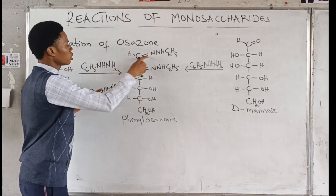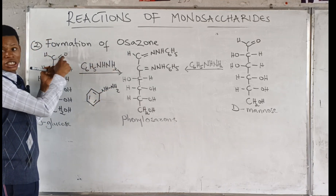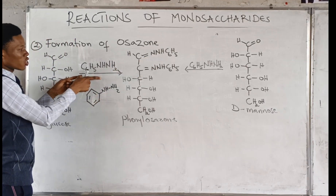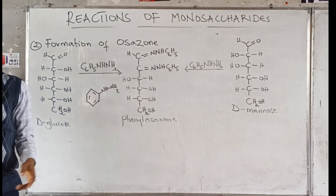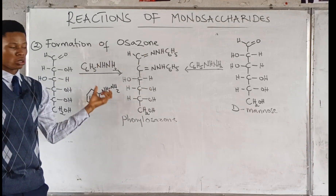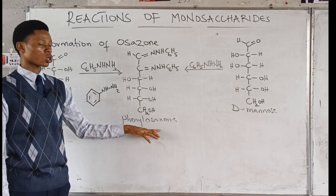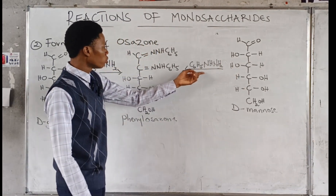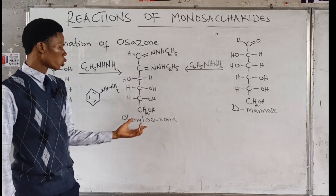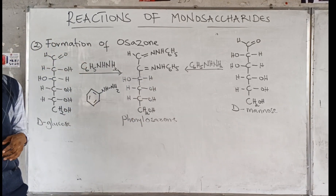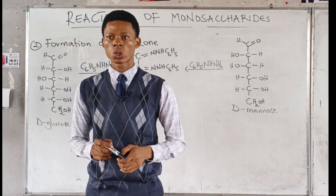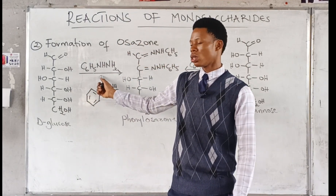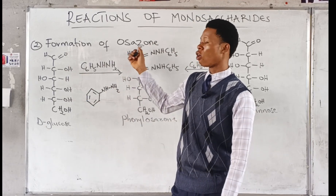The phenylhydrazine attaches to the second carbon as well because we are reacting with excess phenylhydrazine. The structure formed, with all other parts remaining the same, is called phenylosazone. If you use mannose — a C2 epimer of glucose — you still form the same osazone. So monosaccharides undergo formation of osazone when they react with phenylhydrazine.